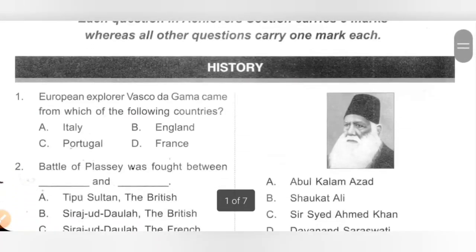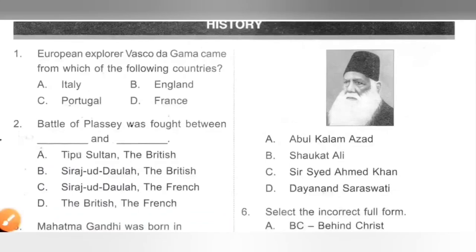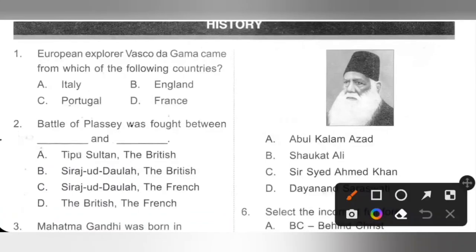The first section is History. Question 1: European explorer Vasco da Gama came from which of the following countries? A. Italy, B. England, C. Portugal, D. France. Vasco da Gama came from Portugal. Option C is the correct answer. He came to India in 1498 and landed at Calicut in Kerala.